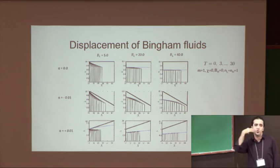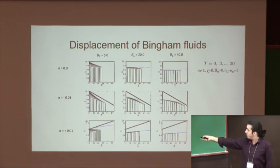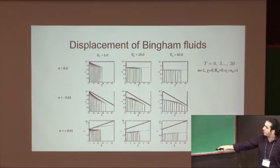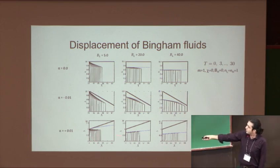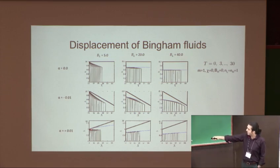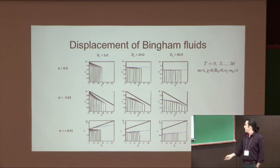Somehow similarly for diverging channel case, you have a critical distance for any given small Bingham number at which the static layer starts to appear.